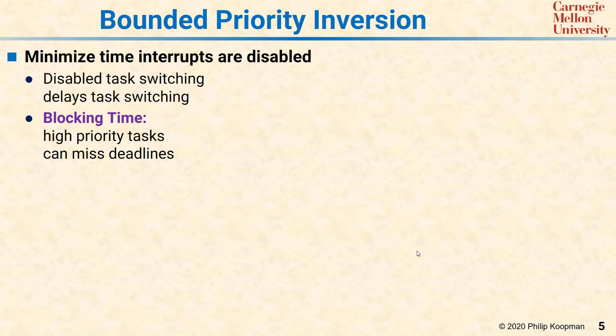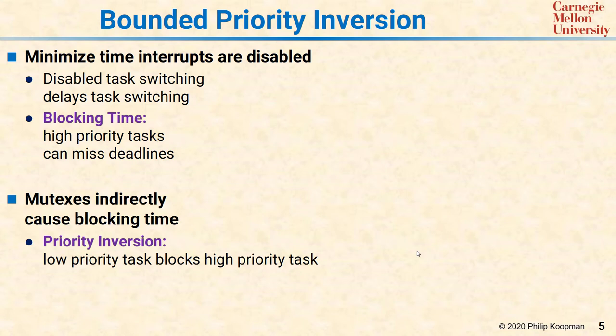The time when the task switcher is disabled is blocking time because if you have a higher priority interrupt or higher priority task, it has to wait until you're done, even if you're a very low priority task that's disabled interrupts. With mutexes, the higher priority tasks that want the same variable are going to see the mutex taken and have to wait for it to be released. The result in either case is priority inversion.